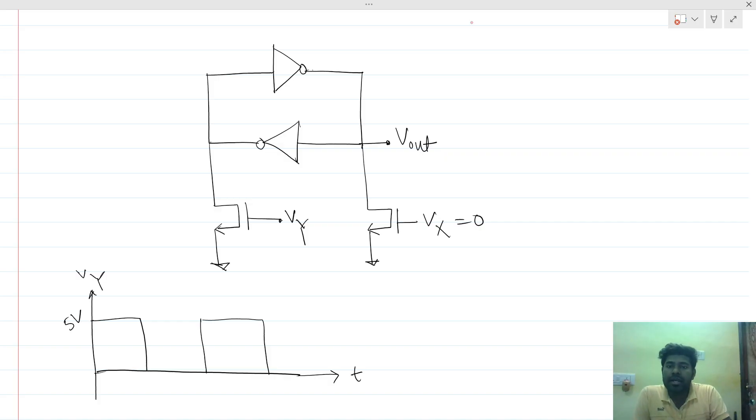VX is always zero and we have VY. This is a square wave of 5 volts and zero volts. Now we have to comment what will be the Vout.